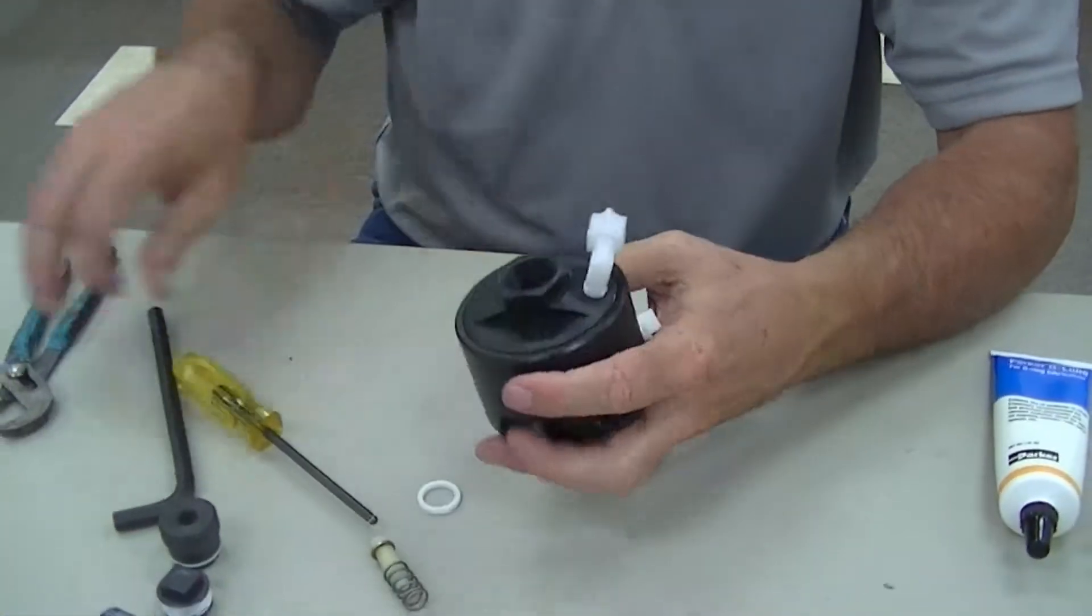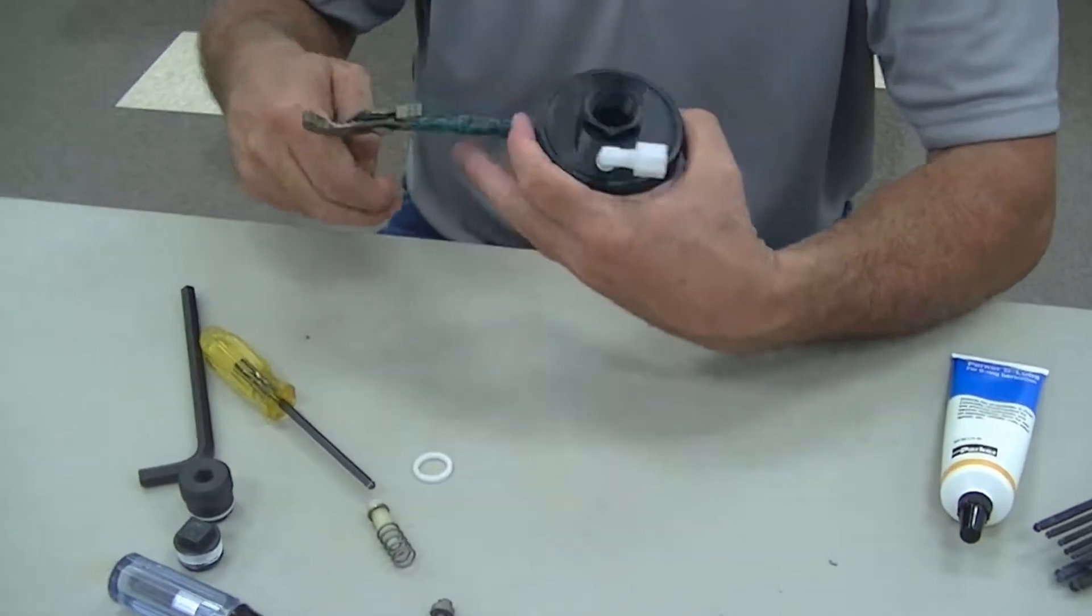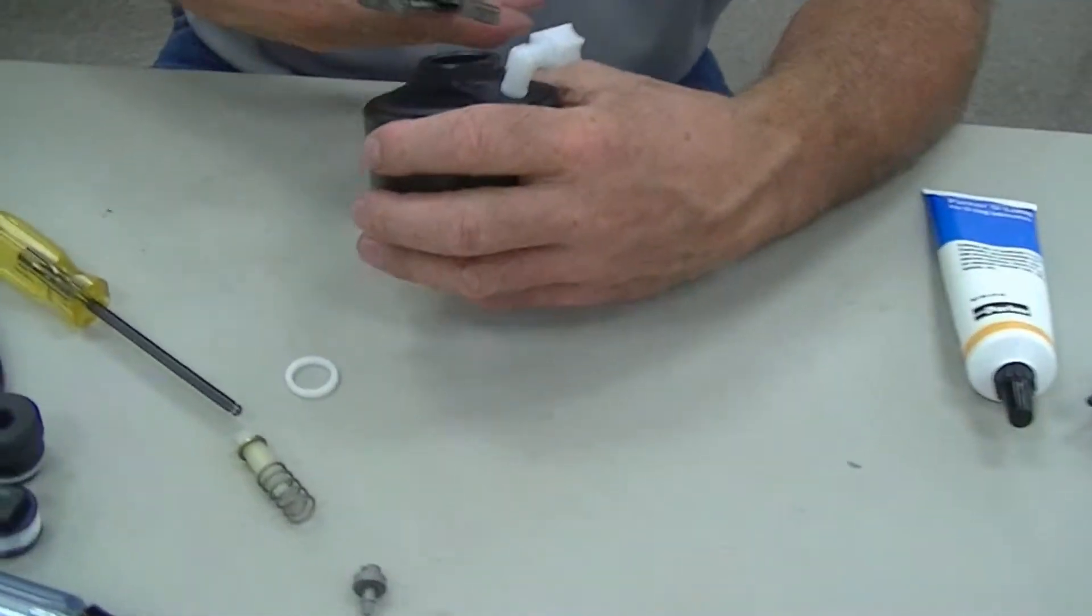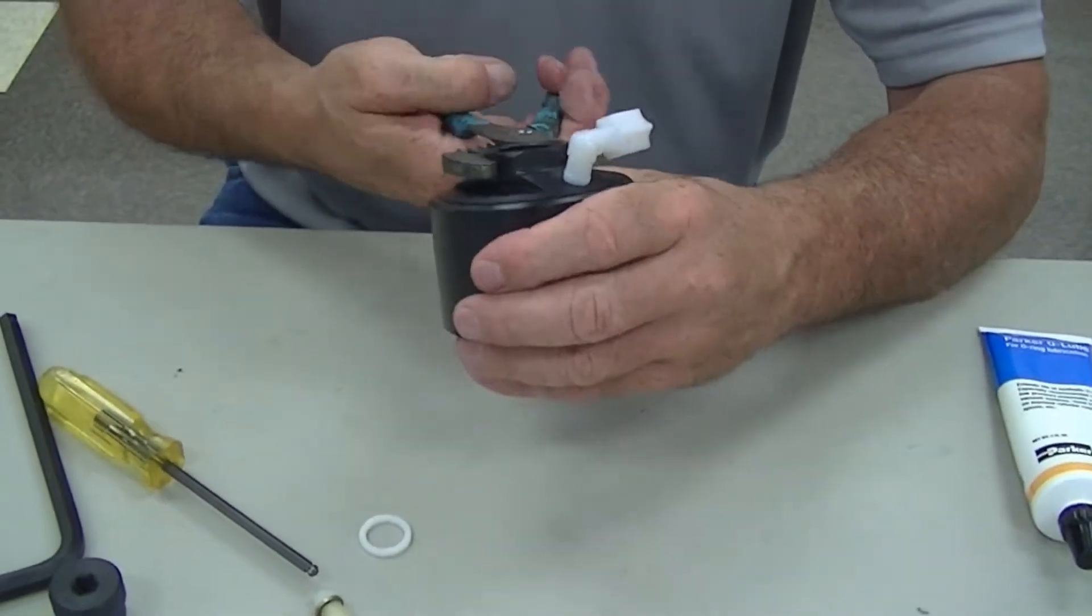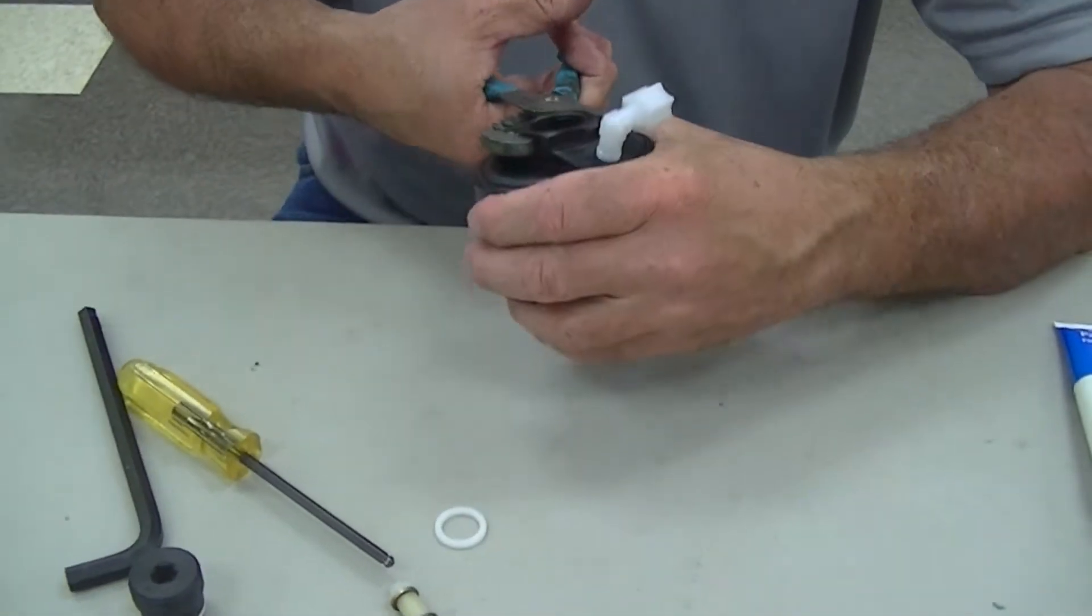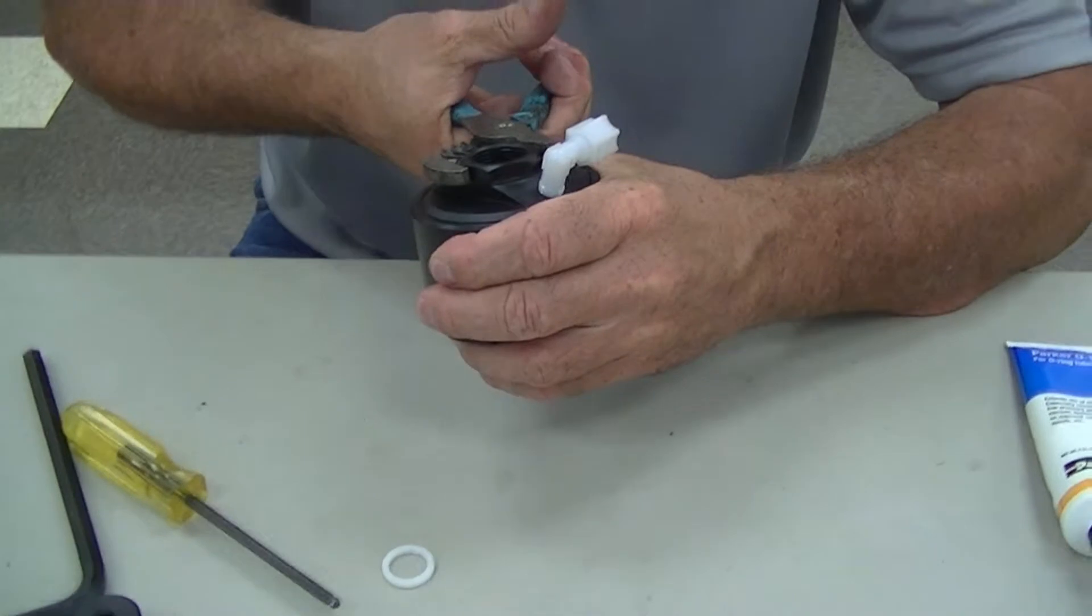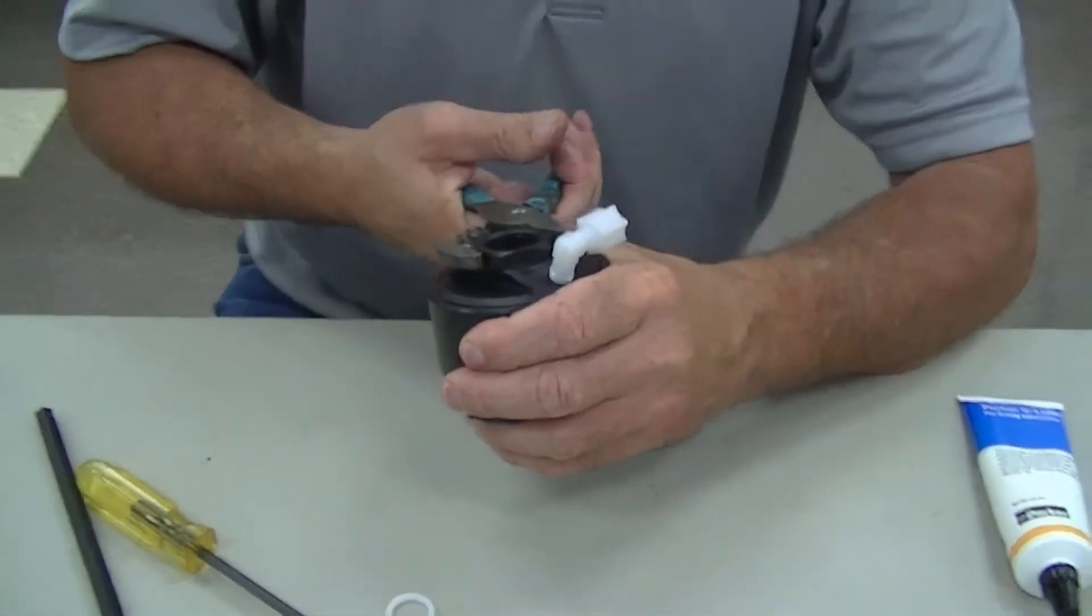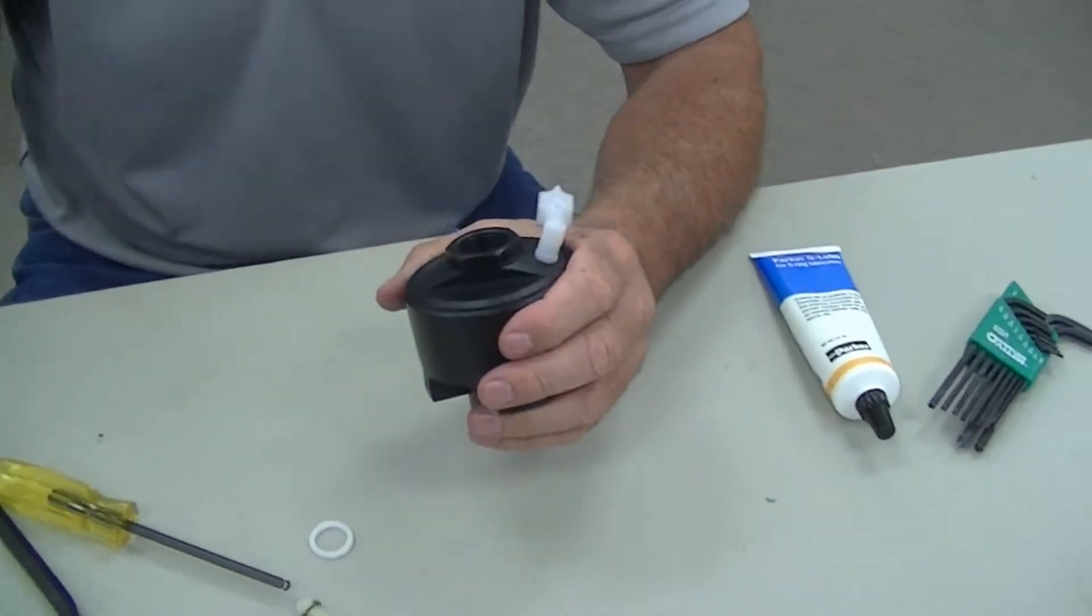I've got that lube on there. Now I can go ahead and tighten this and this is what seals the liquid and keeps it on that side. And just go ahead and snug that up. You don't need to go too tight, just give it a good snug so it feels like it's going to seal against that diaphragm.